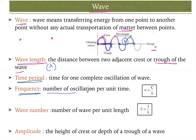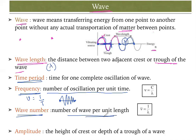Frequency is the number of oscillations per unit time — that means per second, the number of oscillations the wave completes. Wave number is defined as one divided by lambda (1/λ). Amplitude is the height of the crest or the depth of a trough of a wave — that is the maximum height from a reference point, represented by 'a'.